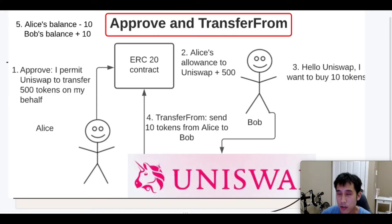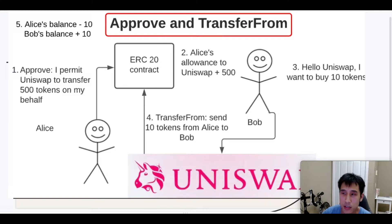The second approach, using approve and transferFrom, is slightly more complicated. It's typically used when you have a third party which is granted permission to transfer tokens on behalf of a user. Let's look at an example.